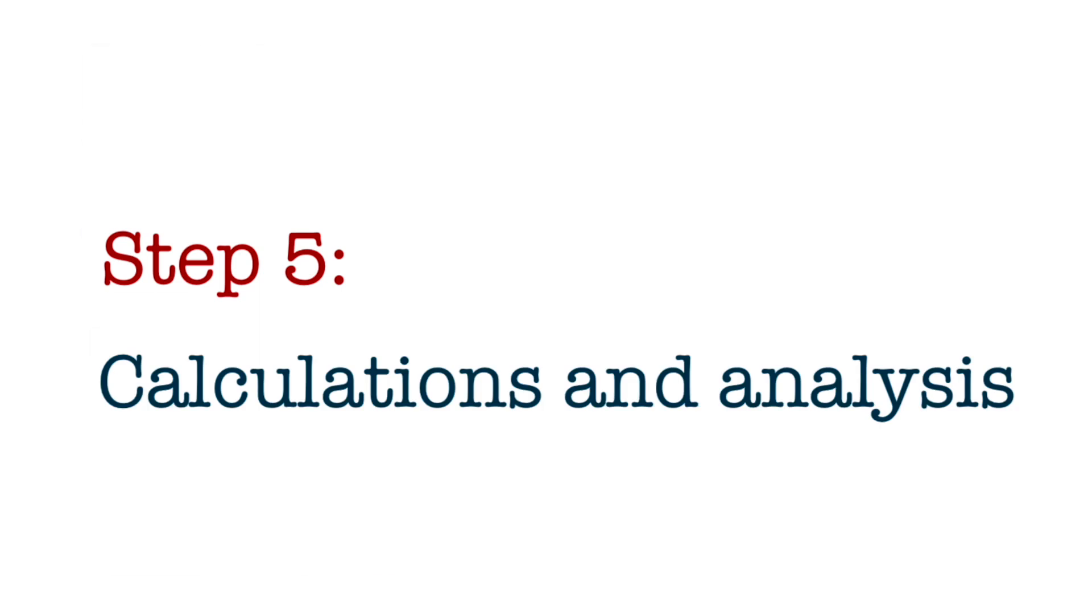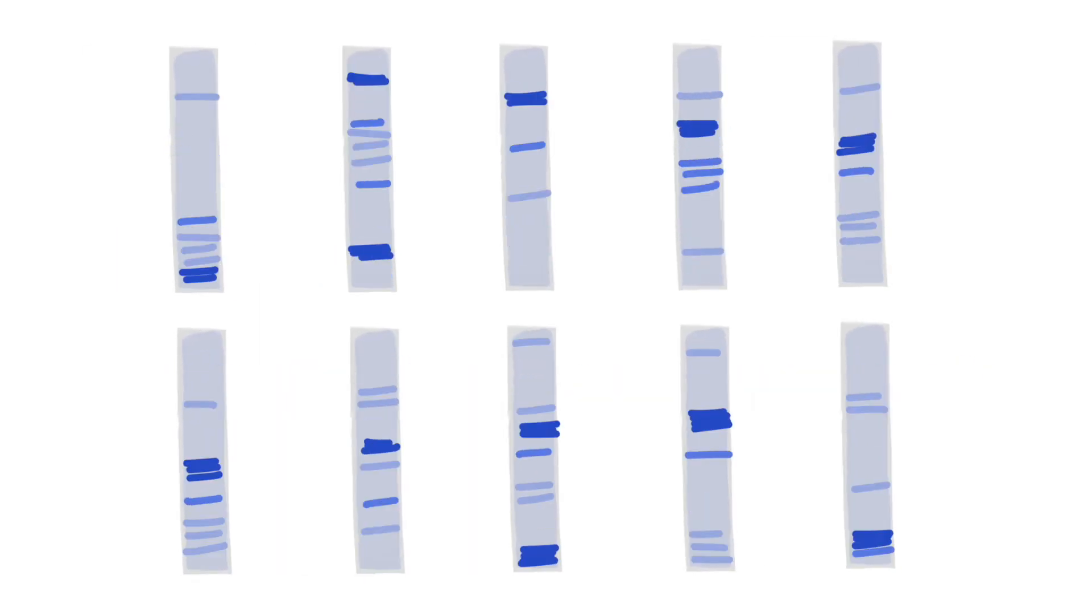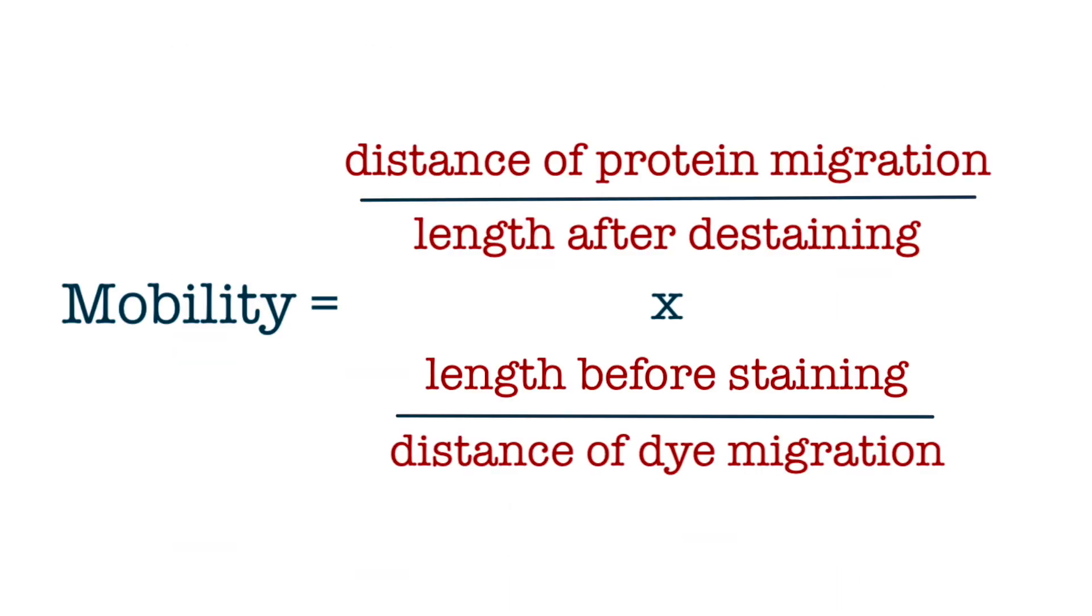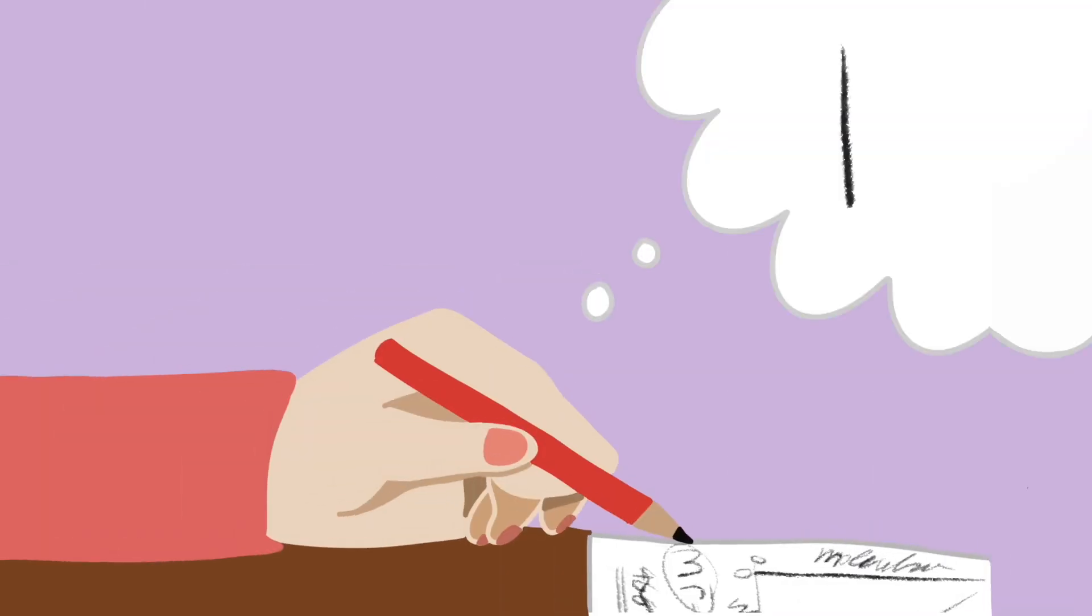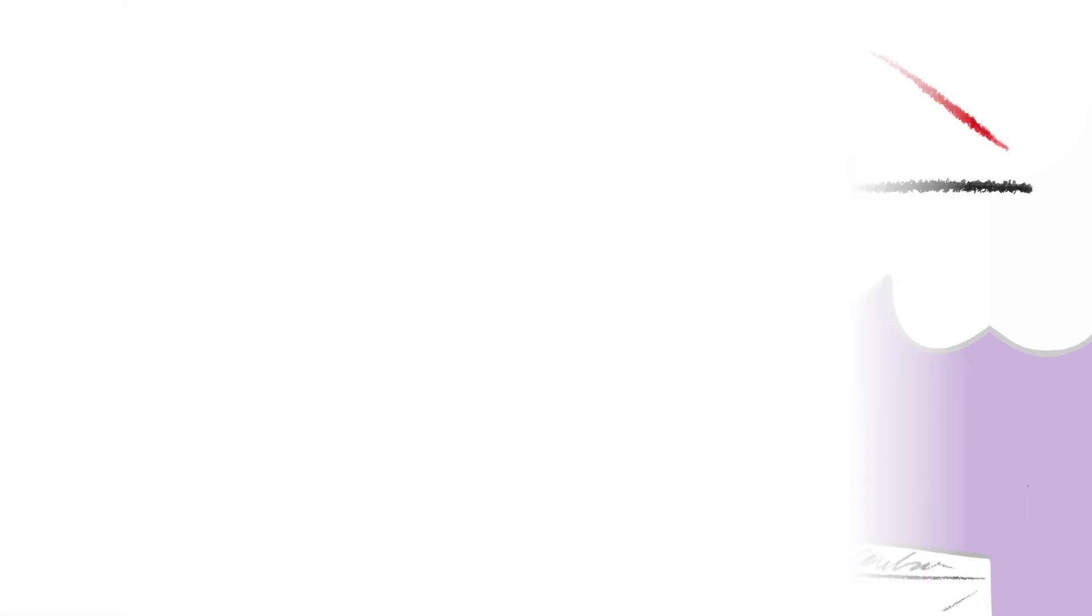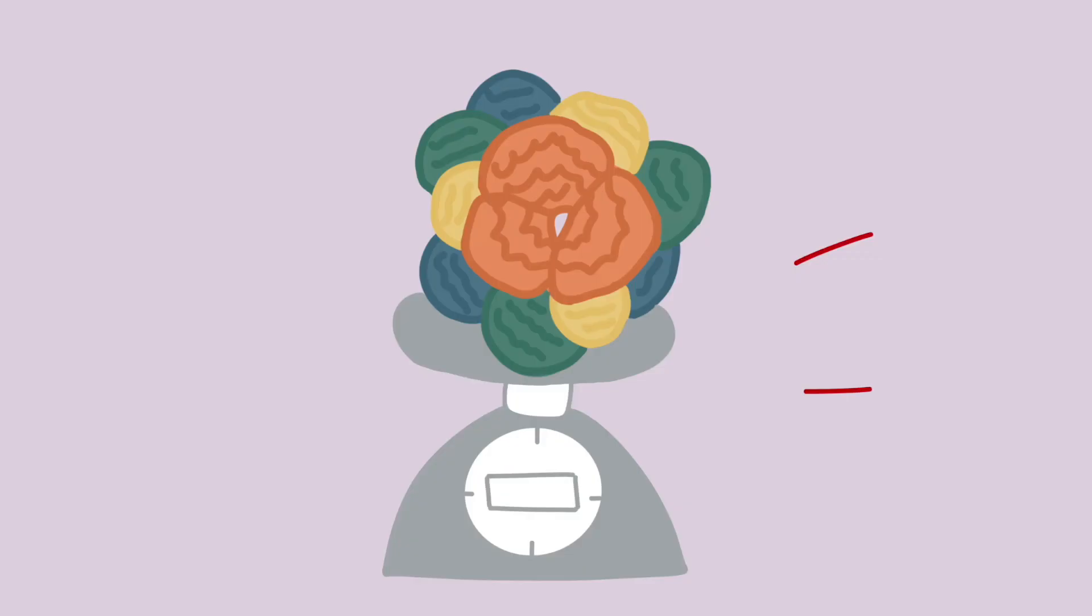And finally, Step 5: Calculations and Analysis. Weber and Osborn recorded data obtained from their gel samples and calculated for protein mobility using this equation. They then conducted a series of analyses and found that Shapiro, Vinuela, and Maisel were right. Protein mobility can, in fact, be used to determine their weights.